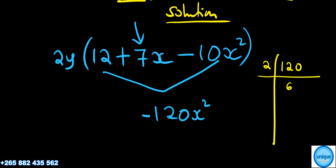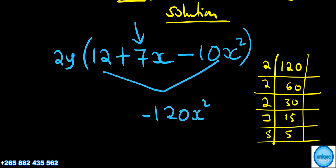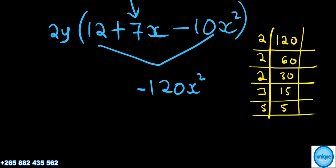2 divides 120 to get 60, 2 divides 60 to get 30, 2 divides 30 to get 15, 3 divides 15 to get 5, and 5 divides 5 to get 1. So let's find the factors overall.